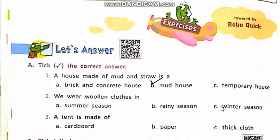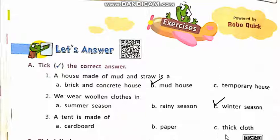Woolen clothes we wear in winter season. Number 3: A tent is made of what? Option A: cardboard. Option B: paper. Option C: thick cloth. Correct answer is C — thick cloth, which is called canvas.